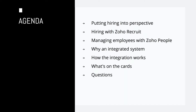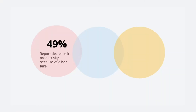Without further ado, let's start putting hiring into perspective. So why do we need the right hiring process? Take a look at this interesting stat. According to LinkedIn Learning, 49% of organizations report a decrease in their productivity because of a bad hire. And not just that, a whopping 78% of organizations admit that they've made a hiring mistake, and it is costing them a lot of money to rectify it in terms of staff turnover, productivity, and other reasons.